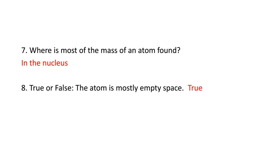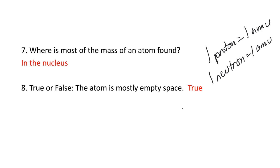Where is most of the mass of an atom found? That's in the nucleus. One proton is one AMU, one neutron is also one AMU, and one electron is 1/1836 AMU — about 2,000 times lighter and smaller than a proton or neutron. So all of that mass is found in the nucleus, not with the electrons. And true or false: the atom is mostly empty space? That's true.